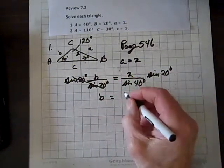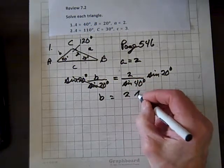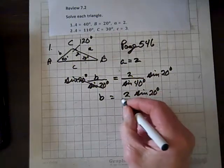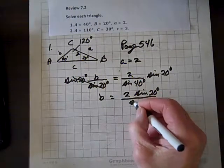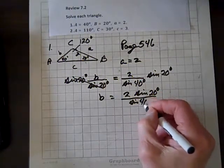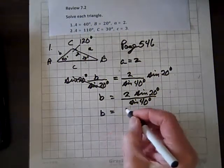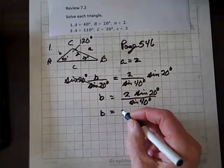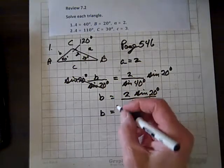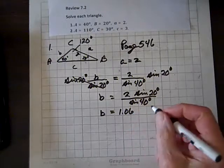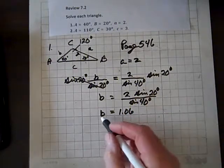We get B equals 2 times sine of 20 degrees over sine of 40 degrees. When we calculate that and round, I get 1.06. So there's B.